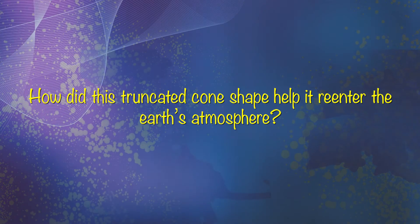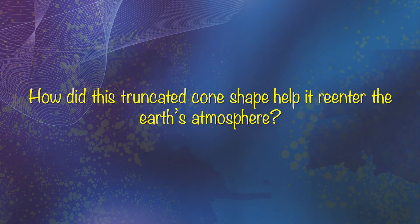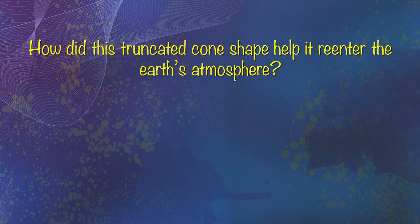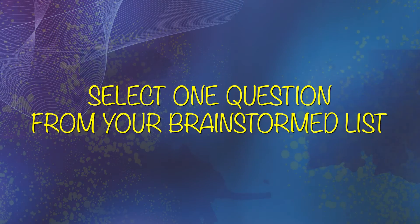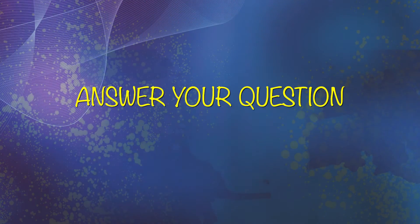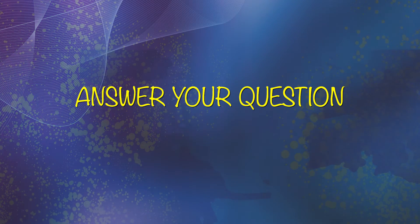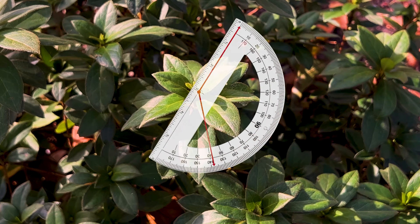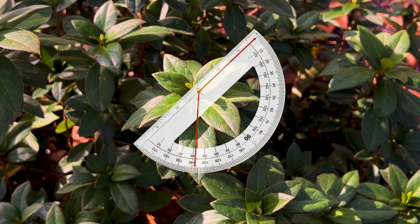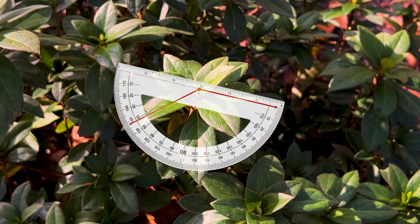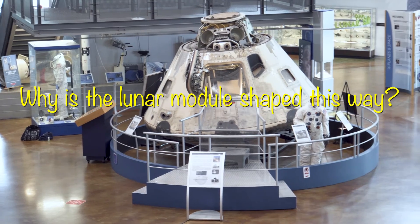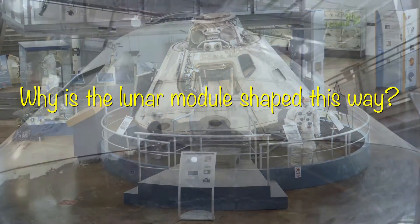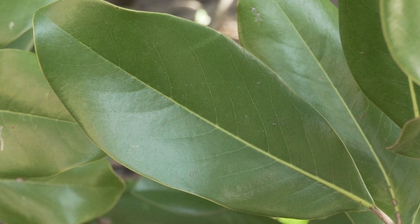The third part of creating your math walk stop is to select one of the questions you brainstormed as your focus for your stop. Select one question from your brainstormed list, and then answer it based upon your observations, measurements, estimation — whatever you need to do to answer the question. Your answer can be precise, it can be an estimate, or it can be a strategy. Here's our personalized math walk question for the lunar module stop at the Frontiers of Flight Museum in Dallas.